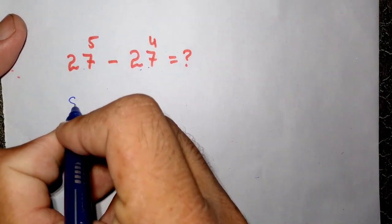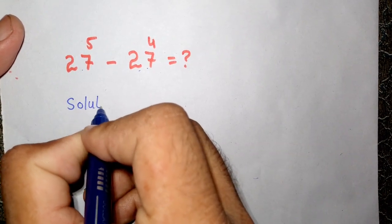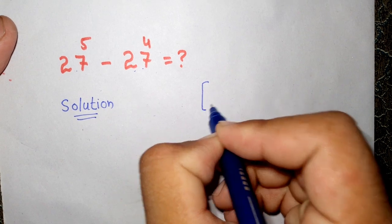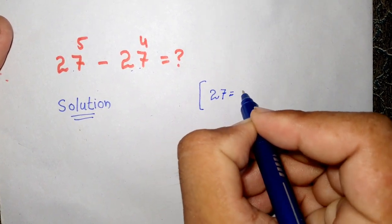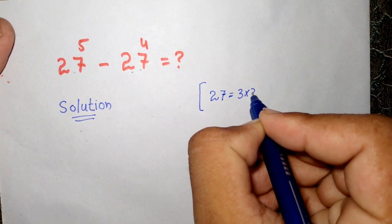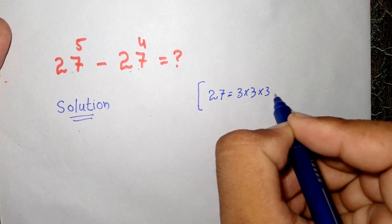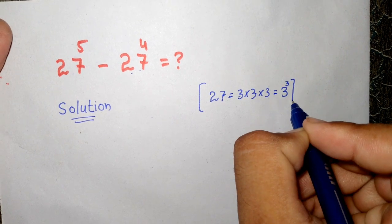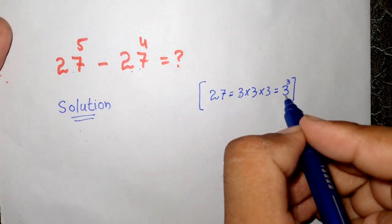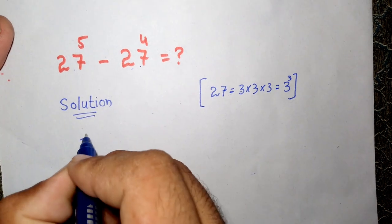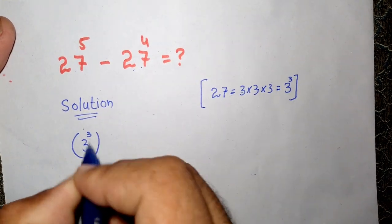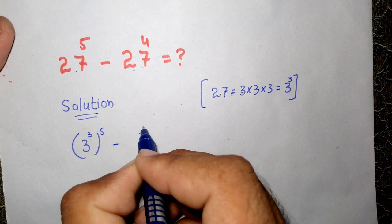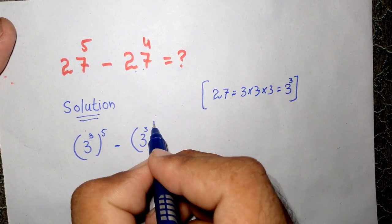Solution. Here we know that 27 is equal to 3 times 3 times 3, which is equal to 27, and this can also be written as 3 to the power of 3. So we have to replace 27 by 3 to the power of 3. This will become 3 to the power of 3, to the whole power of 5, minus 3 to the power of 3, to the whole power of 4.